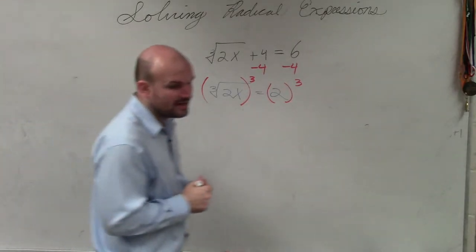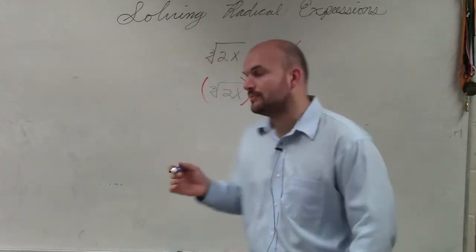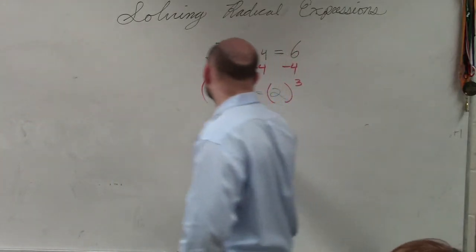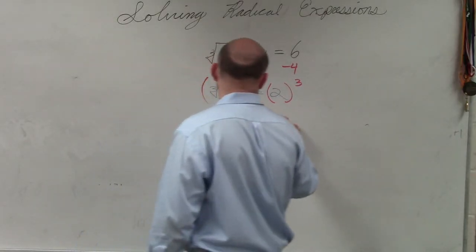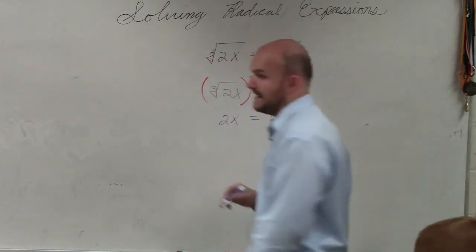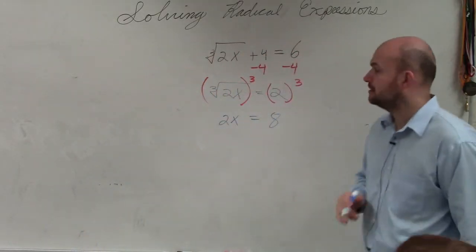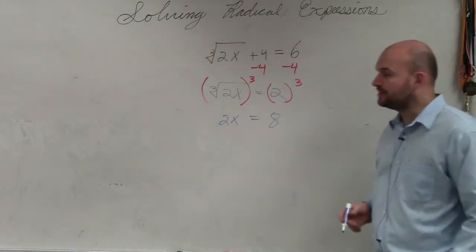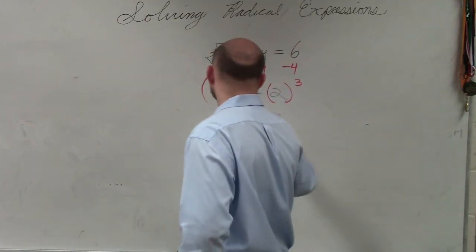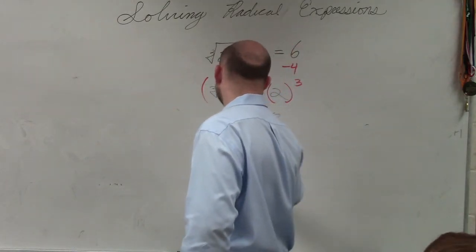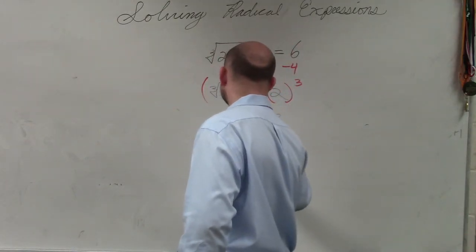Therefore, now what we have is we'll go ahead and be left with 2x is equal to 8. And now we can go ahead and divide by 2. X equals 4.